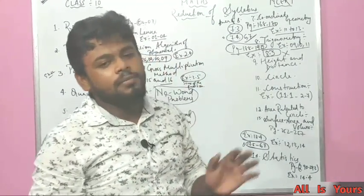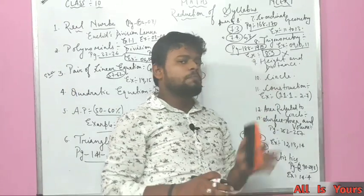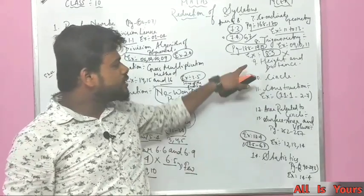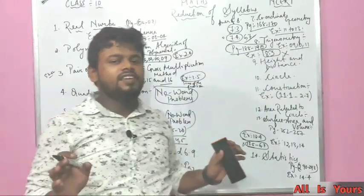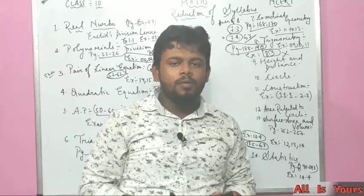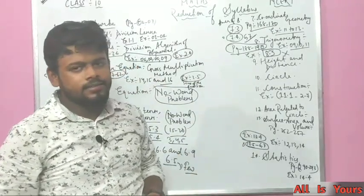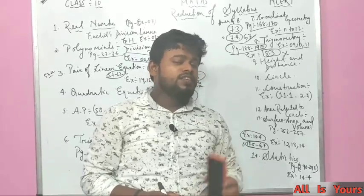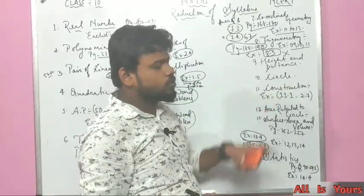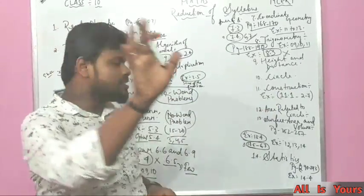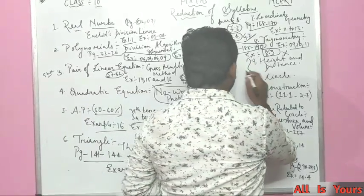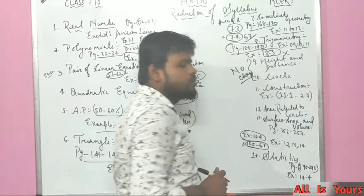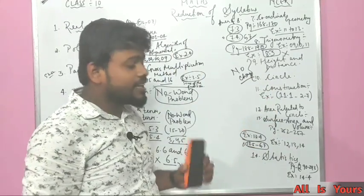Chapter 9, Heights and Distances — there is no change. This topic is important as it will help in Physics in Class 11 and 12 as well, so it's good that the CBSE board did not change it. Chapter 10, Circles — there is also no change at all, not a single change in circles.